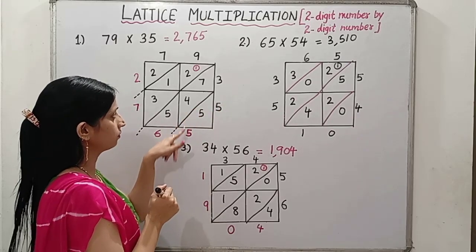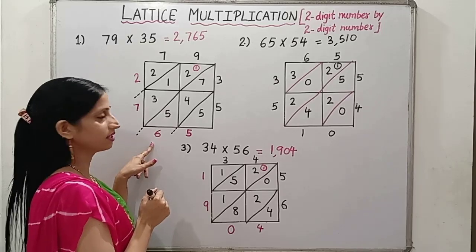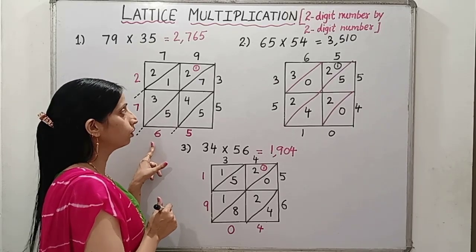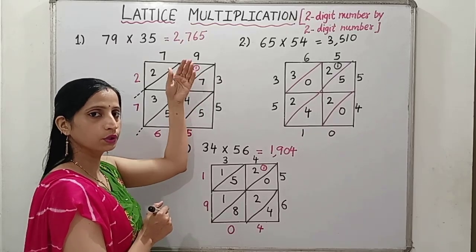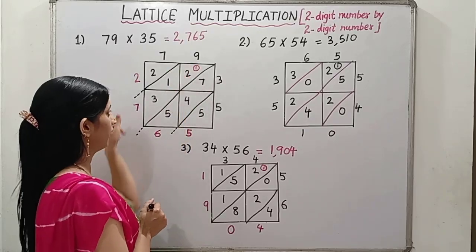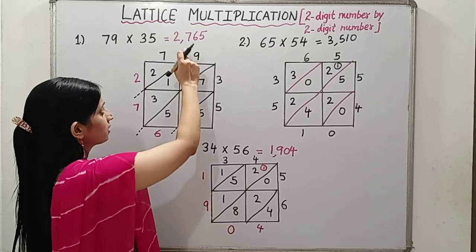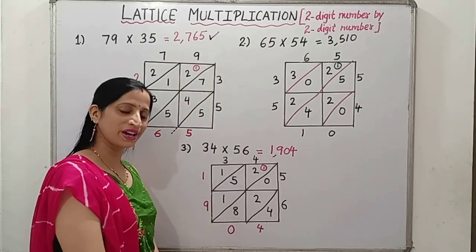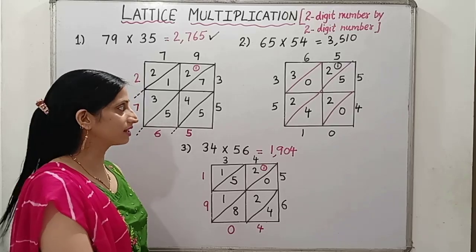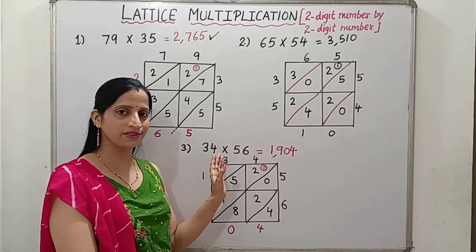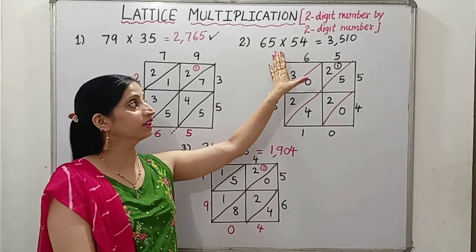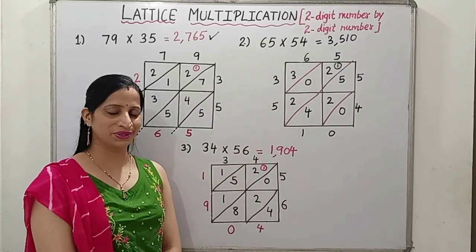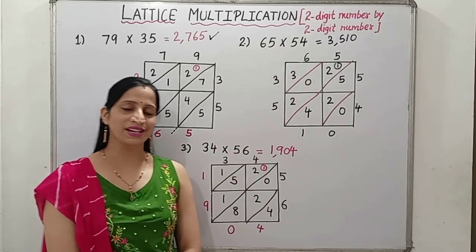As we follow the procedure of carrying over, similarly we will carry over to the next diagonal. Then add, and this will be our required answer. That's all. So I hope you understood. Just practice more questions of lattice multiplication. In my another video, we will do how to multiply a given 3-digit number by 2-digit numbers. Thank you so much.